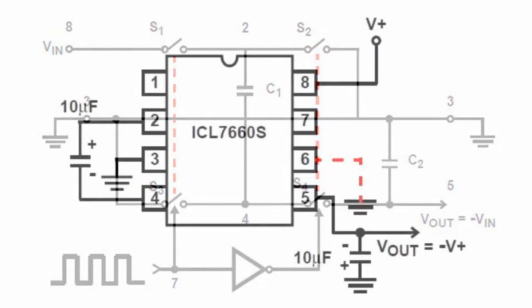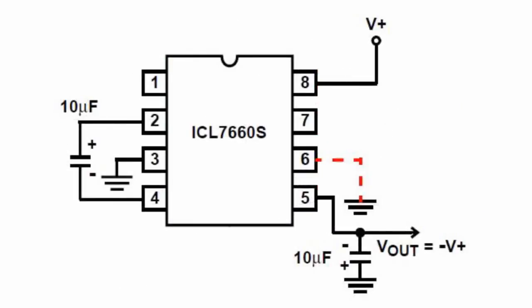The power supply voltage is in the range of 1.5 to 12 volts. The output voltage range is from minus 1.5 volts to minus 12 volts. The output current depends on the resistance in the load.